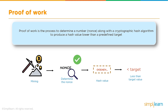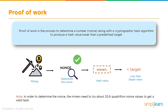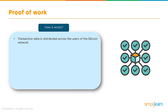Proof of work is a consensus algorithm used in the Bitcoin network. It determines a number called nonce, along with a cryptographic hashing algorithm, to produce a hash value lower than the predefined target. The miner's main task is to identify the nonce that generates a hash value less than the target — typically one with leading zeros. Achieving this requires huge computing power; miners need to try approximately 20.6 quadrillion nonce values to get one valid hash.